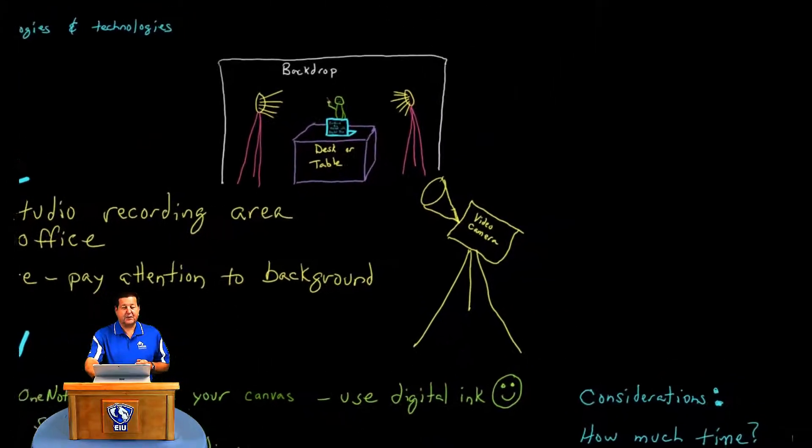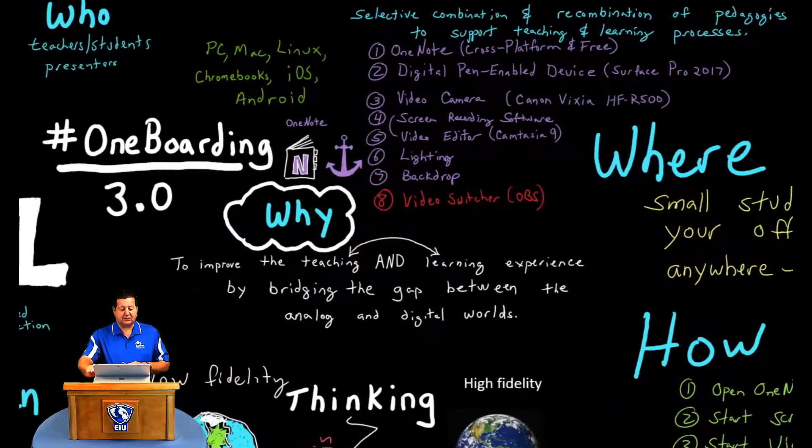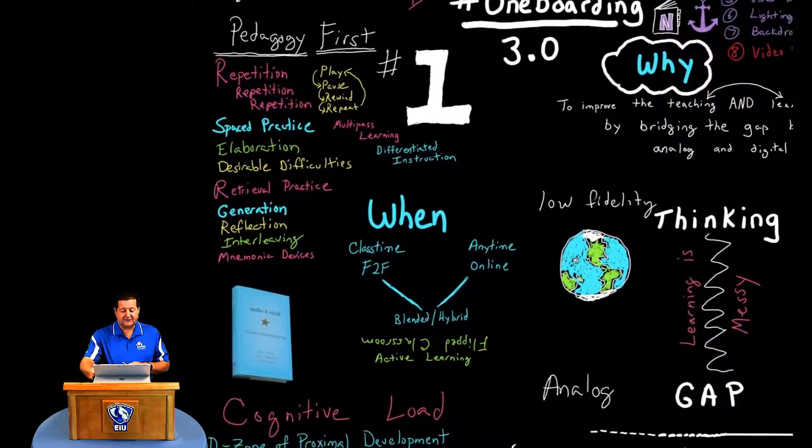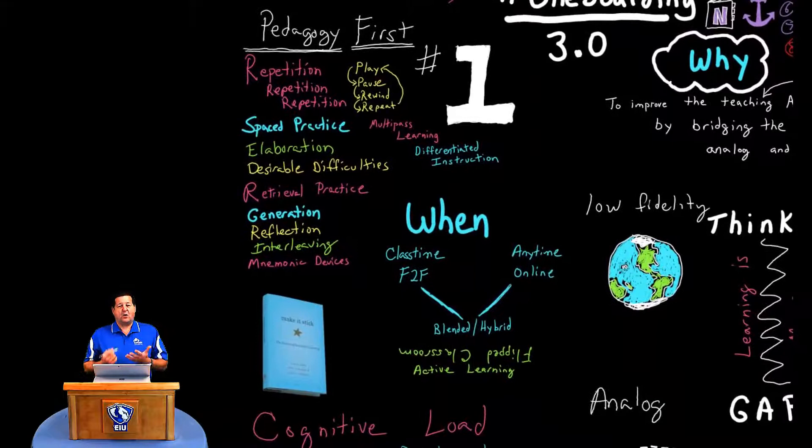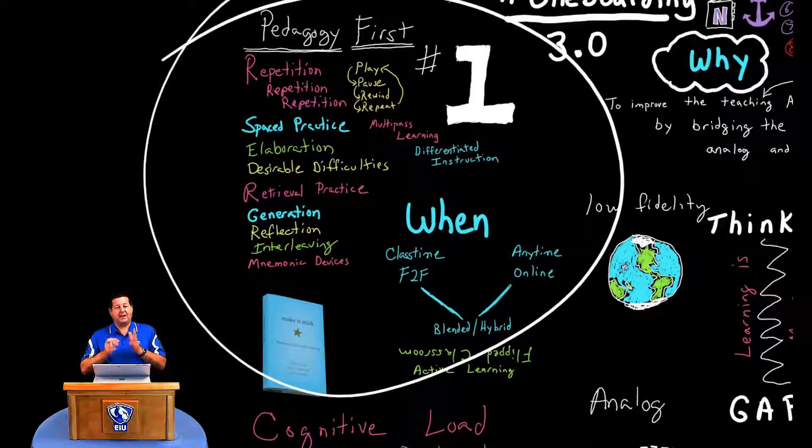In version 3.0, we kept it pretty simple. We were just using a video camera, and then we were recording our screencast, and then in the end we would mash the two together and come up with what we were calling One Boarding version 3.0. Since that time, we've made a number of advancements. But first of all, I'd like to remind everyone what we're doing here is, let me go to my draw menu here, we always want to remember that it's a pedagogy-first approach.